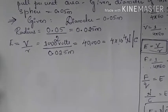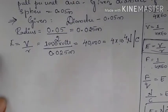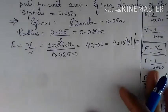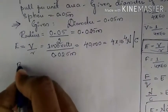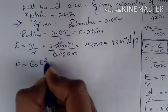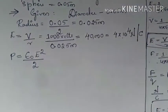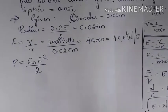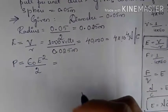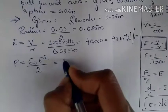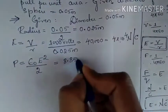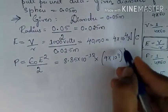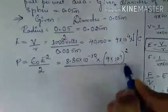We found the electric field because the expression for outward pull per unit area contains E. The formula is P = ε₀E²/2. We know the value of ε₀ = 8.85 × 10⁻¹² and we found E = 4 × 10⁴ N/C, so we substitute both into the expression.